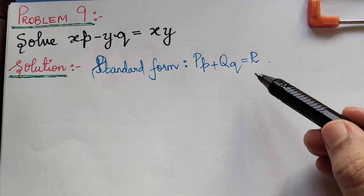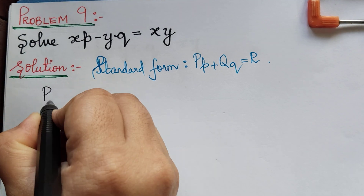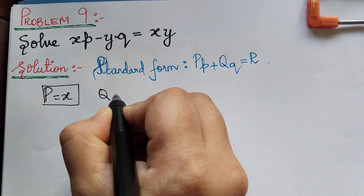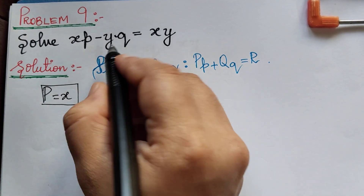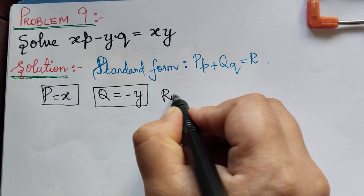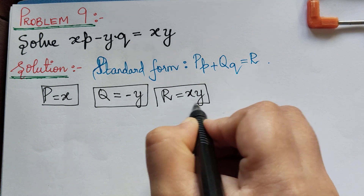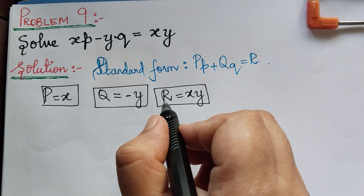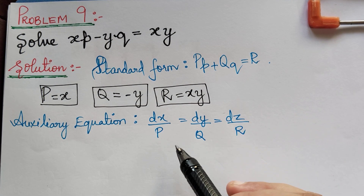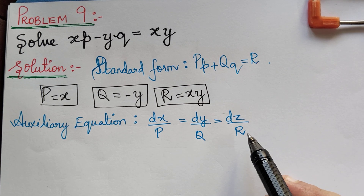Comparing with the standard form, we get the value of capital P equal to x, the value of capital Q equal to negative y, and the value of capital R equal to xy. So we have written P, Q, and R. Now let us write the auxiliary equation for Lagrange's partial differential equation.